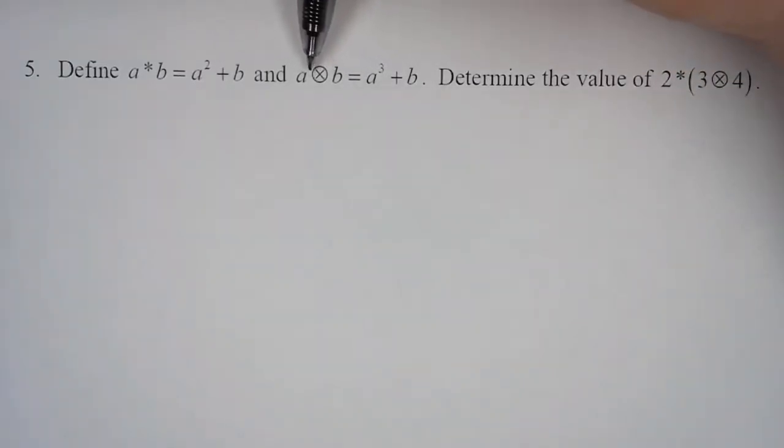And then A circle X B, whatever that is, we take the first number and cube it, and then add the second number.